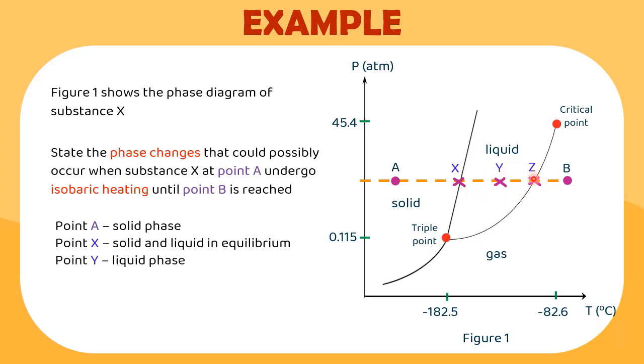As for point Z, again on a line, this time liquid and gas is in equilibrium. And finally, point B is located in gas phase. That's how you interpret this phase diagram.